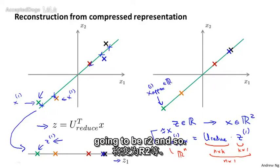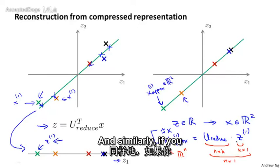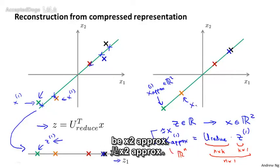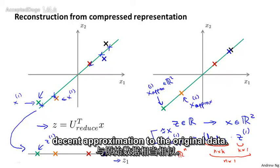Which is going to be in R². Similarly, if you do the same procedure, this would be x2_approx. That's a pretty decent approximation to the original data.